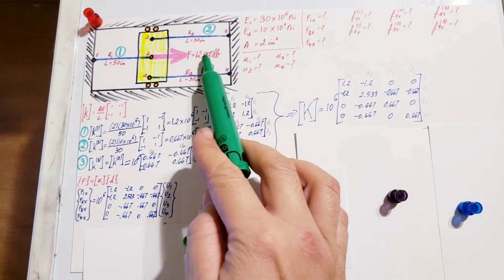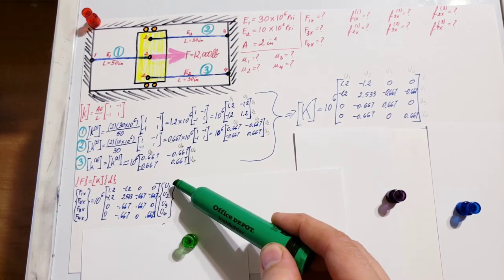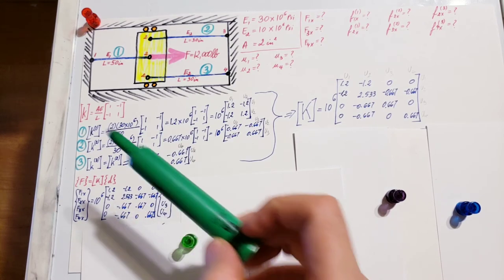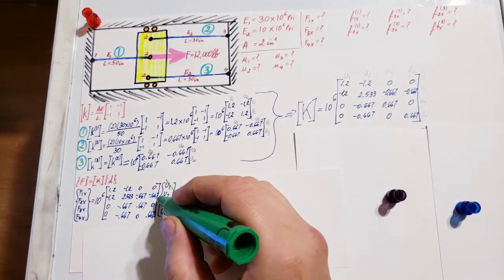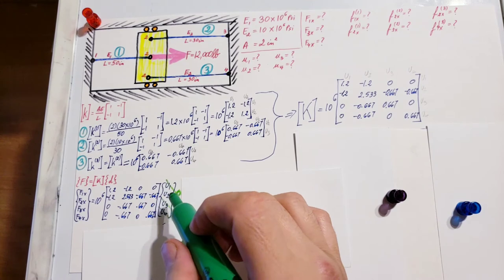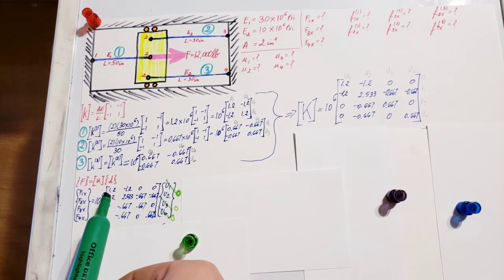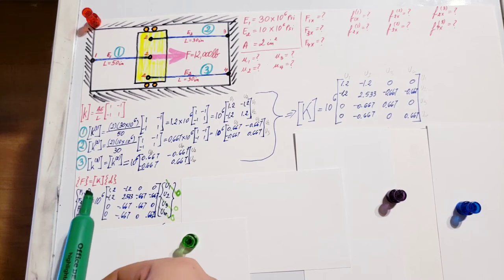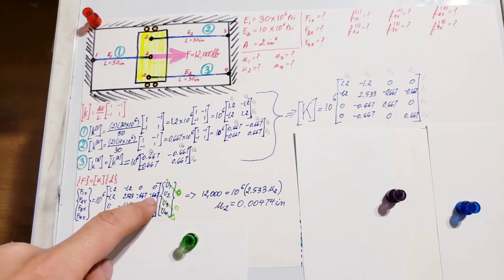Let's check what we know and don't know. f1 we don't know. f2 is given: 12,000 pounds. f3 and f4 we don't know—these three unknowns we need to find. On this side, u1, u3, and u4 are fixed supports, so we can cross them out confidently because they are zero. The only value here is u2, which we need to find first.